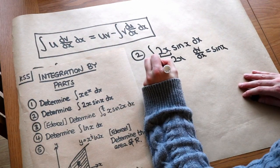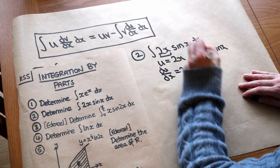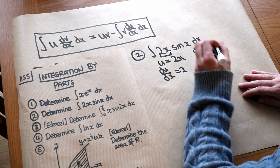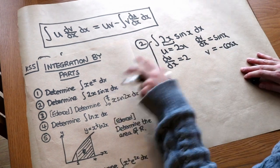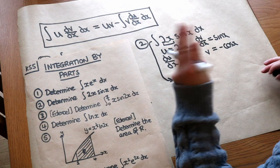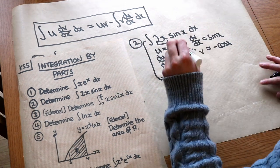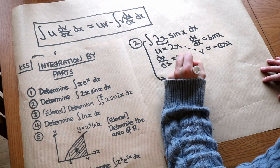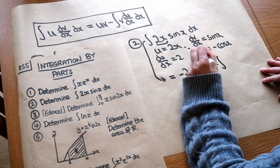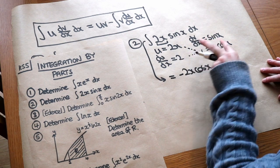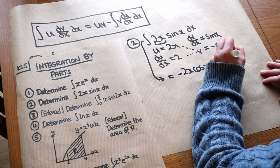As before, we differentiate u to get du/dx = 2, and we integrate sin(x) to get v = −cos(x). Applying integration by parts: we get uv — ultraviolet light — which is 2x·(−cos x), giving −2x·cos(x), minus the integral of the two new things multiplied together: 2 and −cos(x), which is −2cos(x).